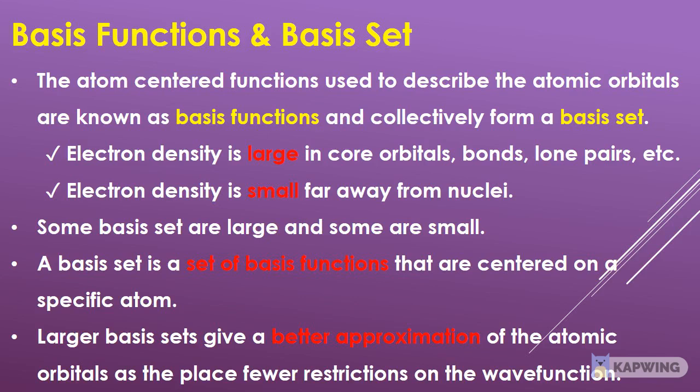Electron density is large in core orbitals, bonds, lone pairs, etc., and is small far away from nuclei. Some basis sets are large and some are small. A basis set is a set of basis functions that are centered on a specific atom.